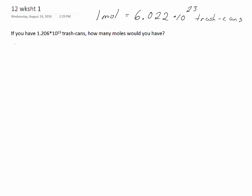So if we have 1.206 times 10 to the 23rd trash cans, and we want to know how many moles that is, then we can use that equality. We would put 6.022 times 10 to the 23rd trash cans in the denominator, and 1 mole of trash cans in the numerator.